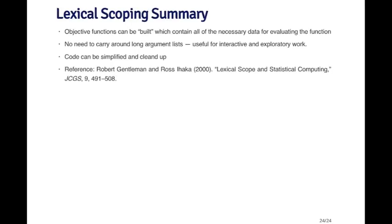Just for reference, the main reference for the lexical scoping rules in R is the paper in the Journal of Computational and Graphical Statistics called 'Lexical Scope and Statistical Computing' by Robert Gentleman and Ross Ihaka, who created R, and they have some very nice examples in this article.